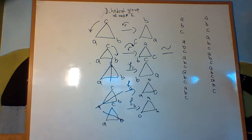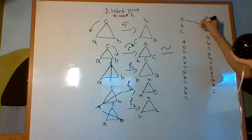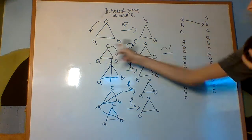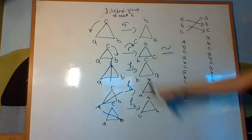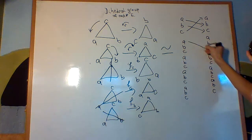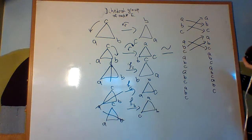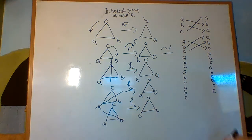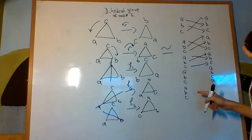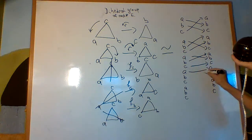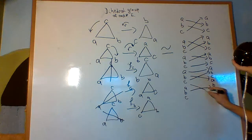Okay? So, in this example, you can see that A goes to B. A moves to B's position. B goes to C's position. C goes to A's position. In this one, A goes to C's position. B goes to A's position. And C goes to B's position. In this example, C's fixed. A and B are switched. In this example, A is fixed. B and C switch. And in this example, B is fixed. A and C switch.